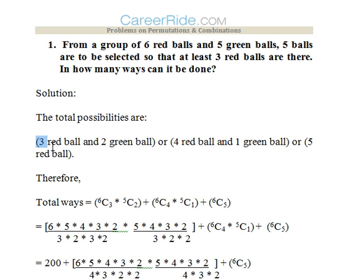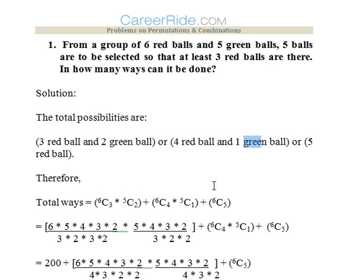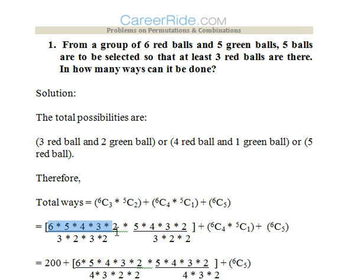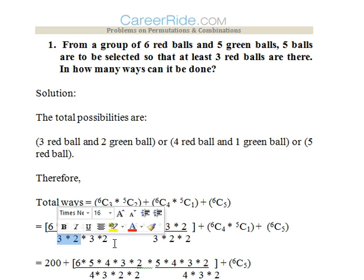We will find out the total ways. The first case is three red balls and two green balls, so it would be 6C3 and 5C2. The second case is four red balls and one green ball, that is 6C4 and 5C1. And when all the balls are red, it would be 6C5.